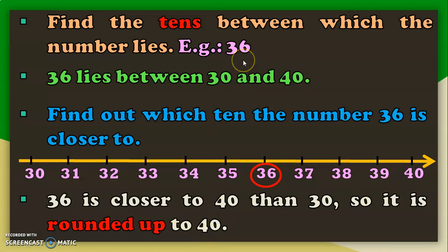So, rounding the number 36 to the nearest 10 will be 40.